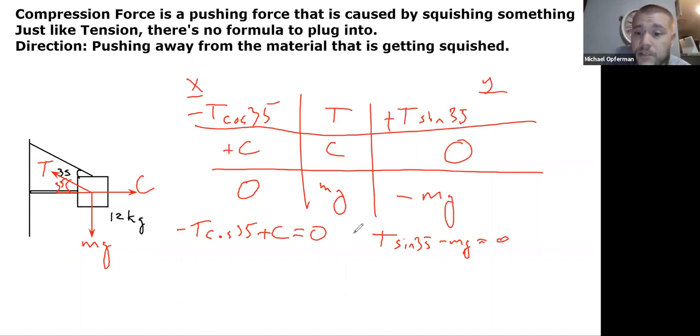So now I can start solving. From the second equation, I can actually solve for the tension right away. This isn't even really a coupled system. So I'm just going to have mg over sine 35. So that's going to be 12 times 9.8 over sine of 35, which is 205 newtons.